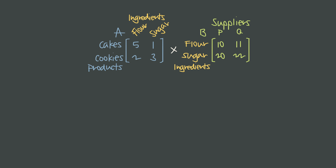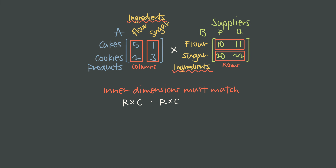Our bakery story also tells us the rules for when we can multiply two matrices together. Matrix A is a 2-by-2 matrix and B is also a 2-by-2 matrix. Importantly, the columns of matrix A represent ingredients, while the rows of matrix B also represent ingredients. For our matrix multiplication logic to work, the number of columns in A had to match the number of rows in B. This is our big rule: the inner dimensions must match. The columns of the first matrix and the rows of the second matrix have to be equal.